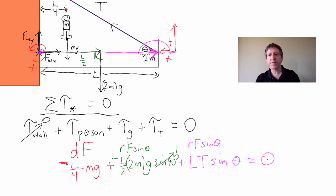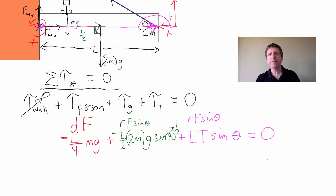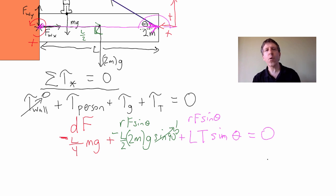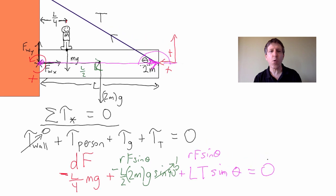How many unknowns are in that equation? L is given, all the masses are given, theta is given — the only unknown is the tension T. Solve that and you're done with the tension. If we also needed to find the force that the wall exerts, that's the only time we'd need to use the other two equations.